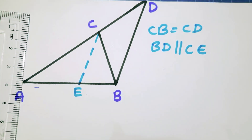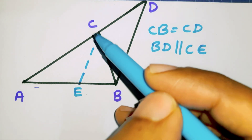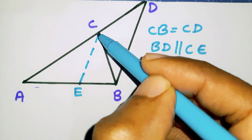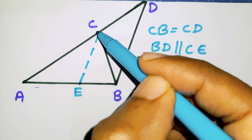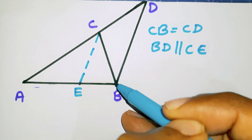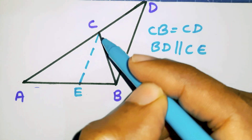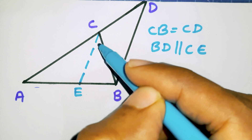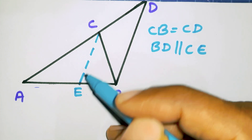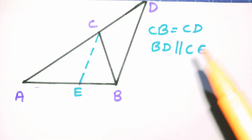This is the first test. This is the angle ACB. This is the angle bisector. Let's prove it. Okay, let's do it.